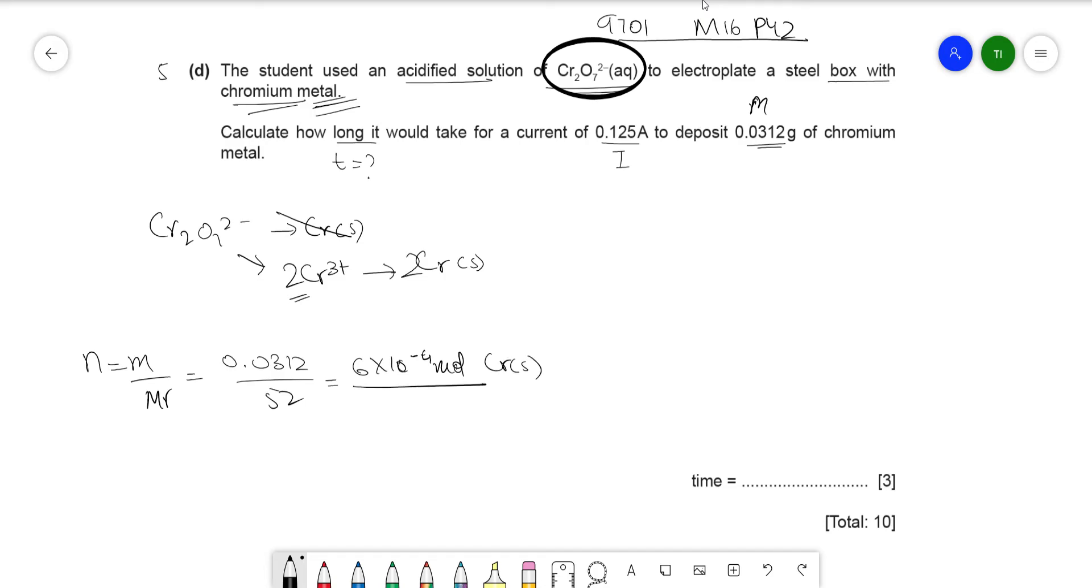Now that you have this value, now you calculate the number of electrons that'll be required to form this.